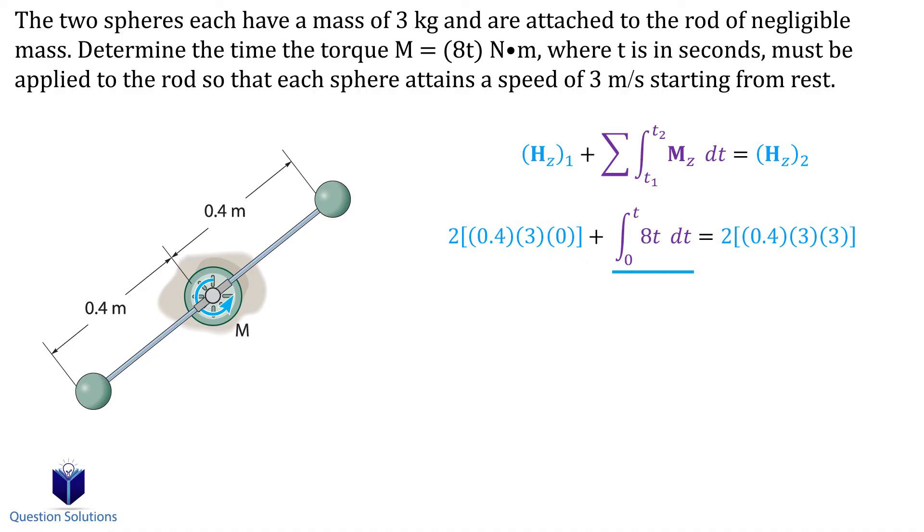Now for the angular impulse. From 0 seconds to a certain time, a moment of 8t is applied about the z-axis. So that's going to be our angular impulse. Now on the other side of the equation, we have the final momenta.